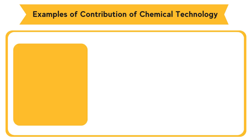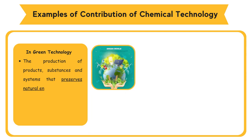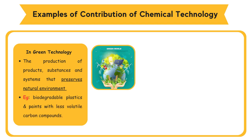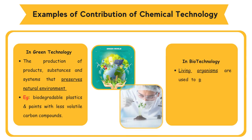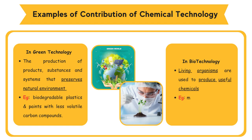Green technology involves the production of products, substances, and systems that preserve the natural environment, such as biodegradable plastics and paints with less volatile carbon compounds. In biotechnology, living organisms are used to produce useful chemicals in medicine, agriculture, and food.